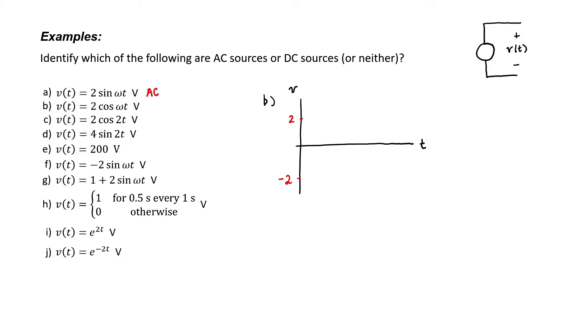Let's move on to example B. Example B is a cosine rather than a sine but it has the same amplitude. It's just phase shifted by 90 degrees or rather it's phase shifted by a certain period of time relative to the source in part A. But it's still periodic. This is an AC source.